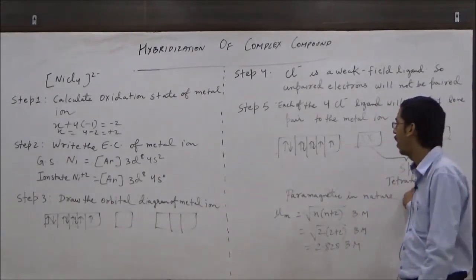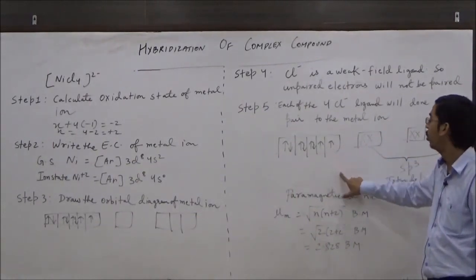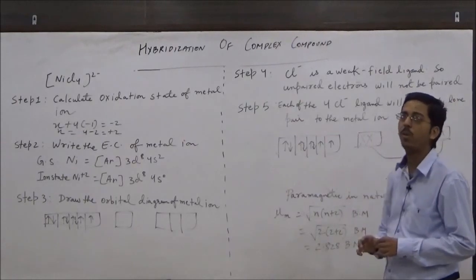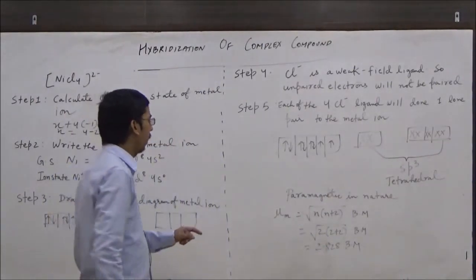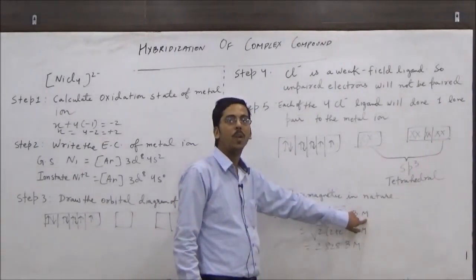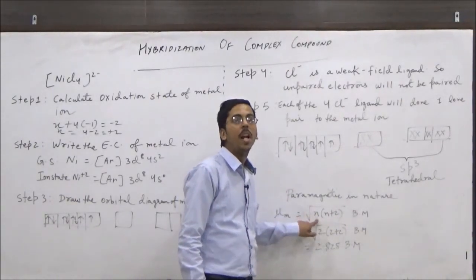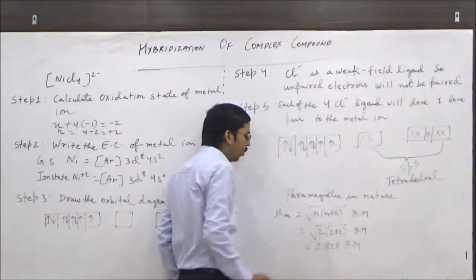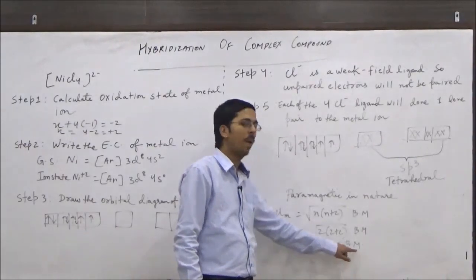So the geometry of the complex ion is tetrahedral. Since this complex ion contains 2 unpaired electrons, it is paramagnetic in nature. Sometimes questions also ask to calculate the spin-only magnetic moment of the complex ion, which is calculated as √(N(N+2)) BM, where BM stands for Bohr magneton — the SI unit of spin-only magnetic moment — and N stands for the number of unpaired electrons. In this case, there are 2 unpaired electrons, so the spin-only magnetic moment is √(2×4) = 2.83 Bohr magneton.